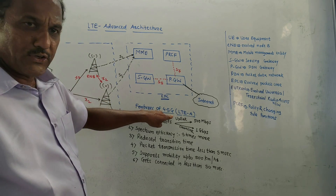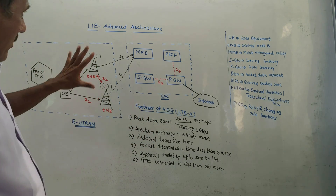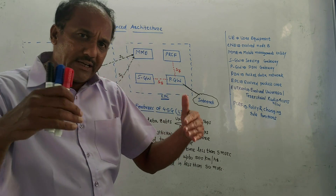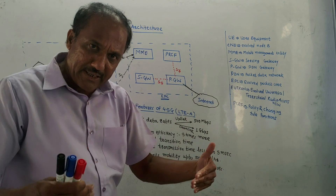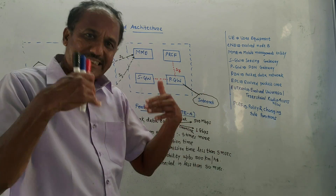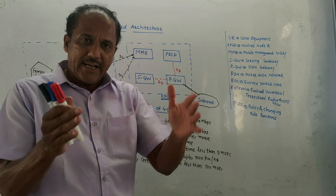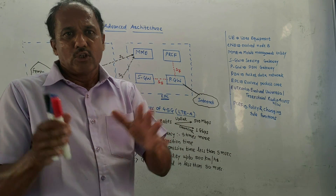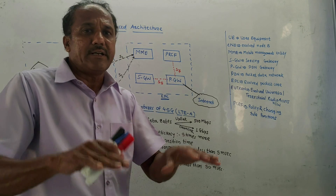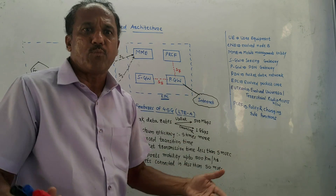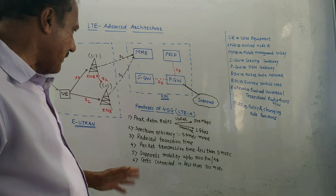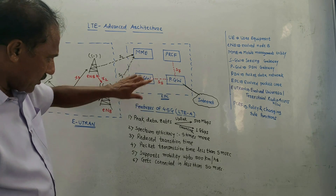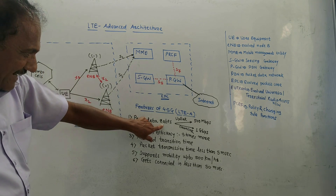LTE Advanced, as the name indicates, is designed to increase the network capability and network capacity of the existing LTE network, and it well supports all existing networks, so interoperability is quite possible. Some of the important features of this LTE Advanced technology are peak data rates.